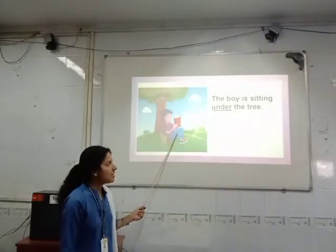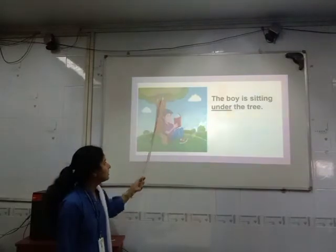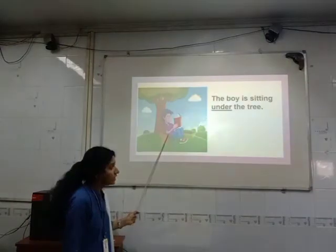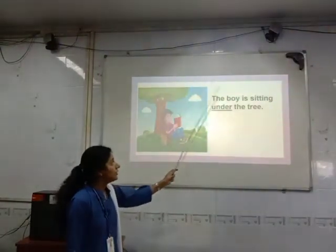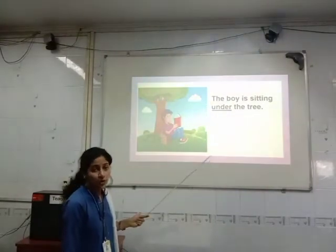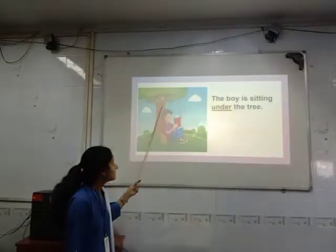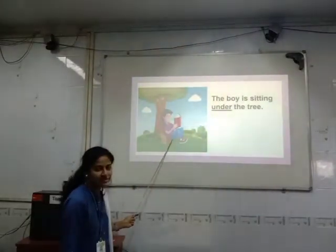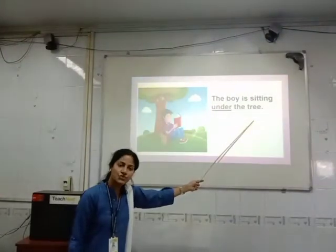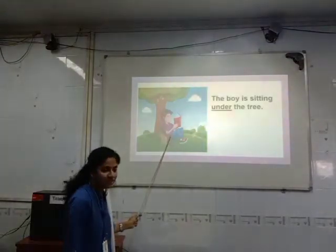In this picture, what does this boy do? The boy is sitting under the tree. He is reading a book but he sits under the tree. See this sentence: The boy is sitting under the tree. So the word 'under' shows us exactly the position of this boy.